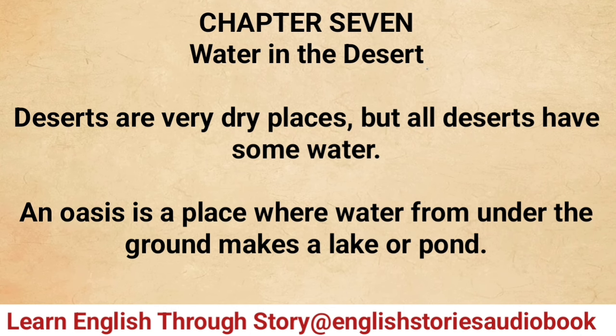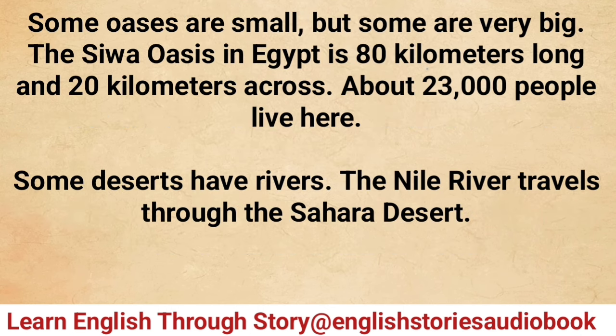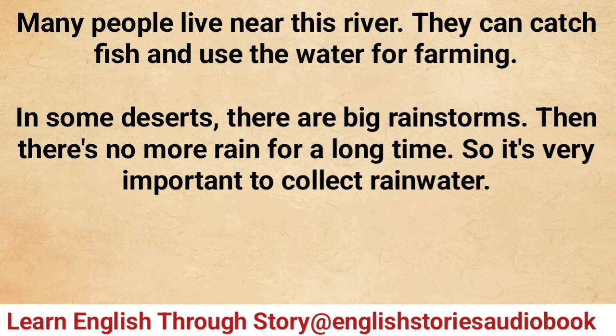Chapter seven: Water in the desert. Deserts are very dry places but all deserts have some water. An oasis is a place where water from under the ground makes a lake or pond. Some oases are small but some are very big. The Siwa Oasis in Egypt is 80 kilometers long and 20 kilometers across — about 23,000 people live there.